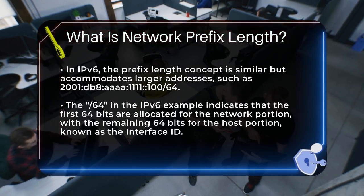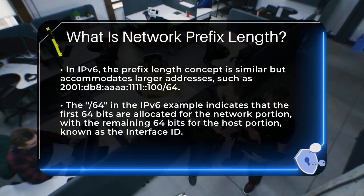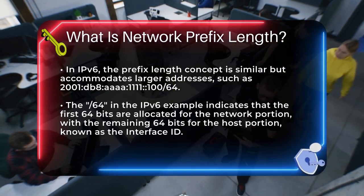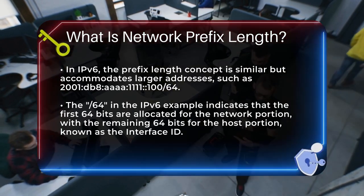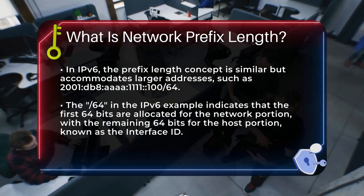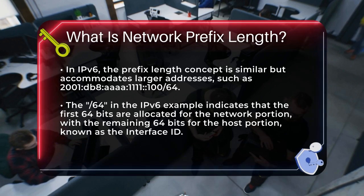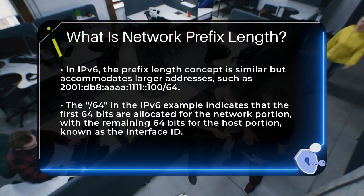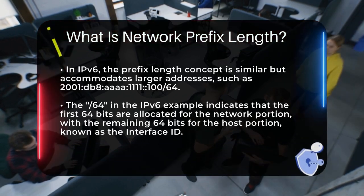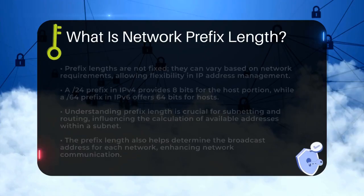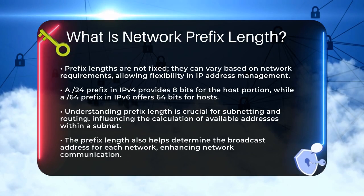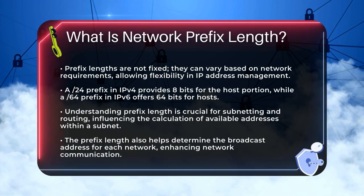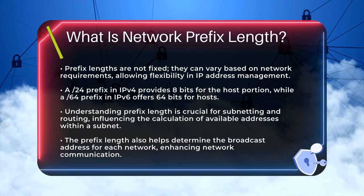For example, a /24 prefix in IPv4 leaves 8 bits for the host portion, while a /64 prefix in IPv6 leaves 64 bits for the host portion. This flexibility allows network administrators to manage and organize IP addresses efficiently, ensuring that the right number of devices can be connected to the network.